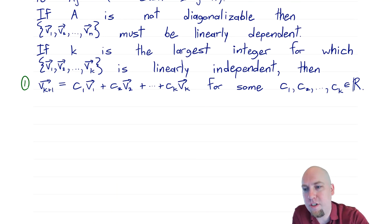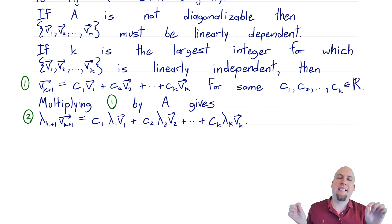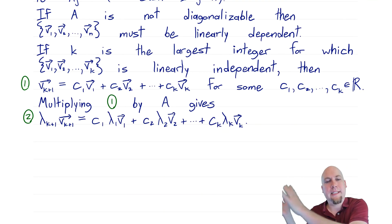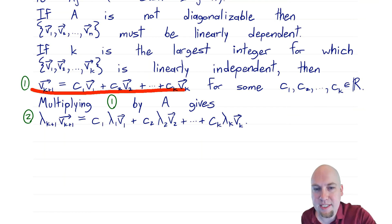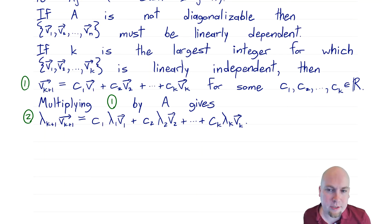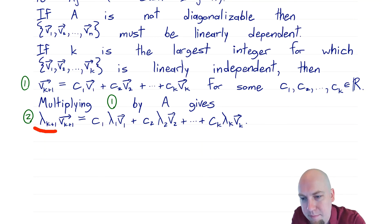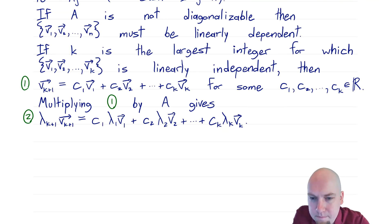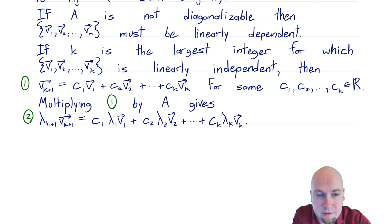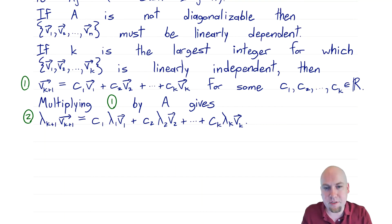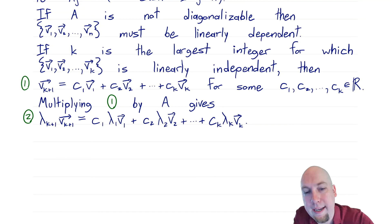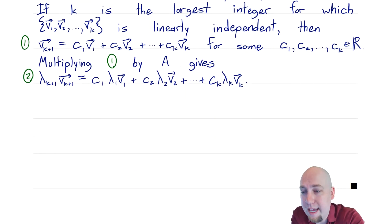Now I'm going to take equation one and multiply on the left by the matrix A — so A goes on the left of both sides of that equation. Remember, each of these vectors are eigenvectors of A. So A times vk+1 equals lambda k+1 times vk+1, and similarly A times v1 equals lambda 1 times v1, A times v2 equals lambda 2 times v2, and so on — because multiplying by A is the same as multiplying by the corresponding eigenvalue. Call that new equation, equation two.